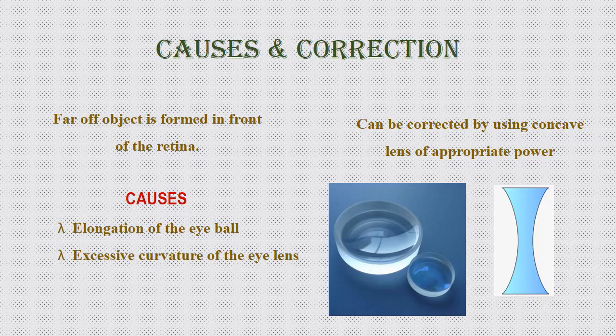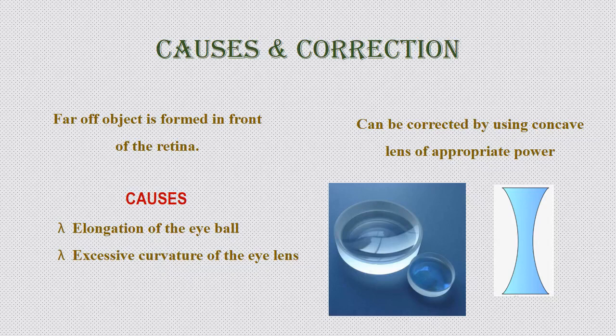Now, what are the causes for myopia? The main causes are elongation of the eyeball — that is, the size of the eyeball is increasing — and excessive curvature of the eye lens. The eye lens can increase or decrease in its curvature depending upon the position of the object. If there is excessive curvature, it cannot extend beyond a certain limit and therefore cannot see objects which are at a far-off distance.